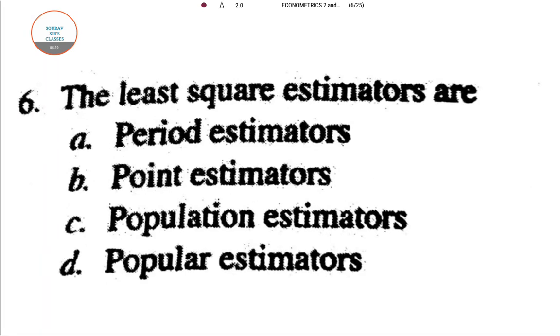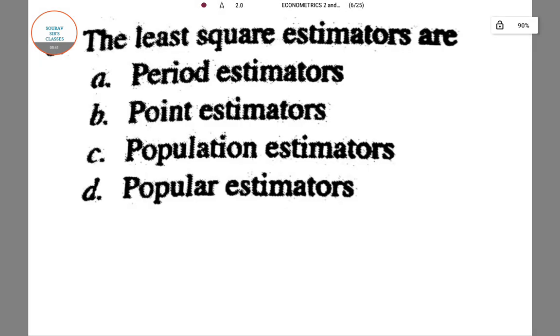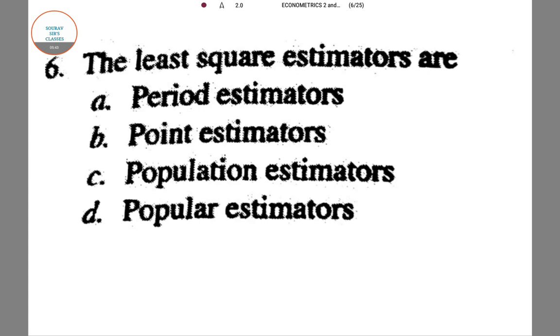Next one is the least square estimators. What about the least square estimator is happening. So least square estimators are period? No they are not period estimators. Least square estimators happen every point wise. This is a discrete estimator.